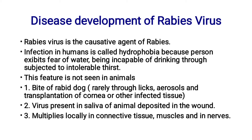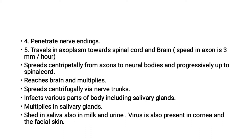What is the disease development of Rabies Virus? The first step is the bite of a rabid dog or transplantation of cornea or other infected tissues. The virus is present in the saliva of animals and deposited in the wound. The virus then multiplies locally in connective tissue, muscles, and nearby tissues.